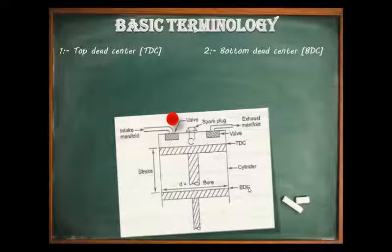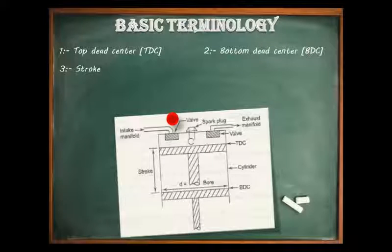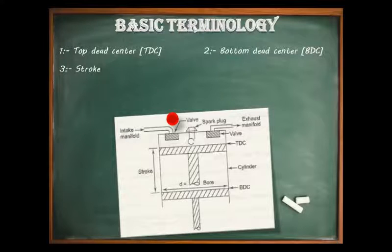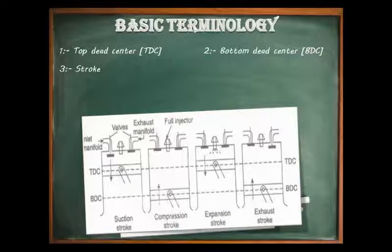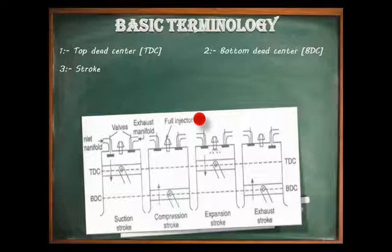The third term is piston stroke. A piston stroke can be simply defined as the distance through which a piston travels from BDC to TDC. The piston travels from TDC to BDC and from BDC to TDC, as shown in this figure, during the four strokes of the IC engine.